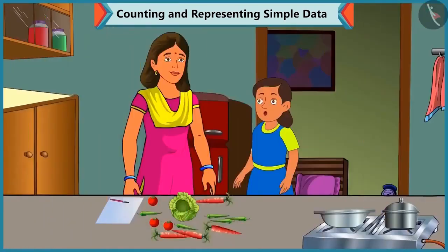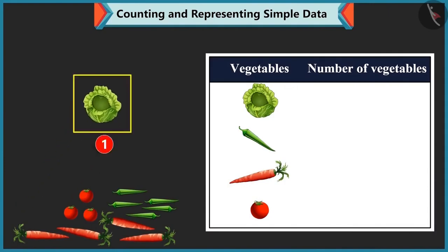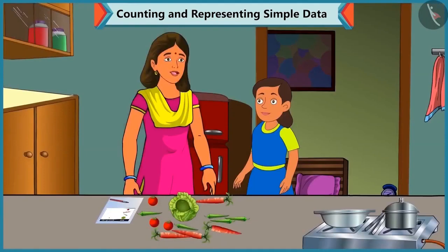Bubbly asks if she can help in grouping the vegetables. Mummy says yes and demonstrates: the number of cabbages is 1, so we write 1 in front of cabbage. In the same way, we have to count the remaining vegetables and write the number against each one.